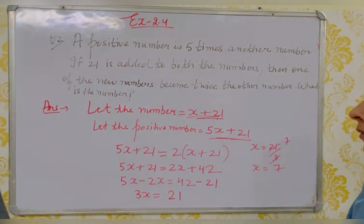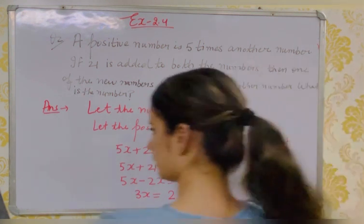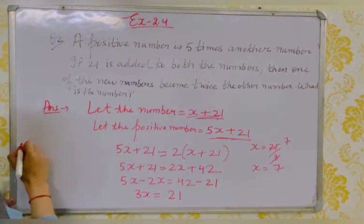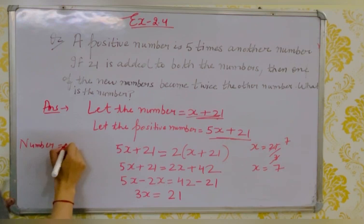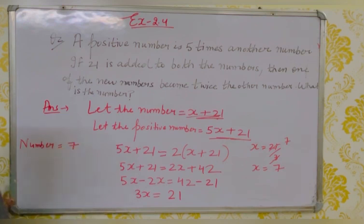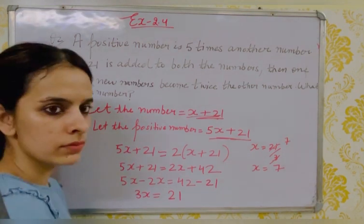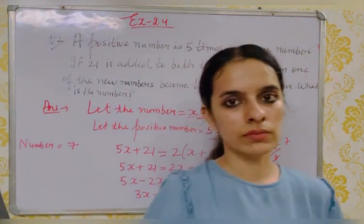So the smaller number is x = 7, and the larger number is 5x = 35.